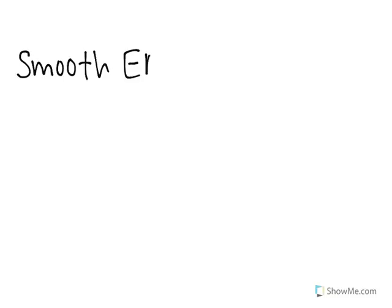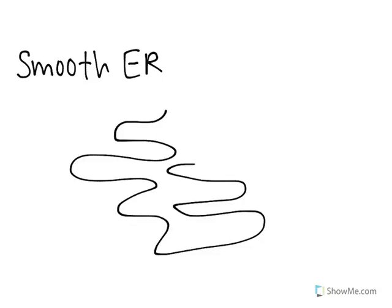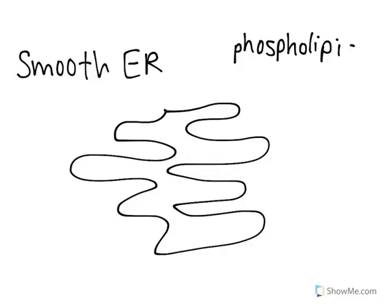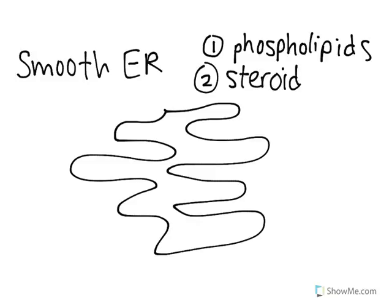Third, we're going to talk about the smooth endoplasmic reticulum. This is essentially the same as the rough endoplasmic reticulum except it doesn't have ribosomes on it. The smooth endoplasmic reticulum plays a huge role in synthesizing lipids, including phospholipids which help make the cell membrane. So both the smooth and rough endoplasmic reticulum play a role in forming the cell membrane. It can also synthesize steroids — for example, estrogen and testosterone are both steroids created by the smooth endoplasmic reticulum.